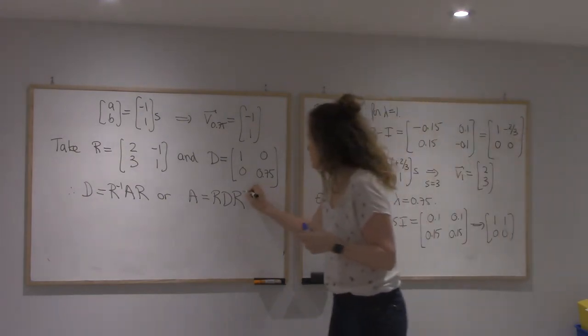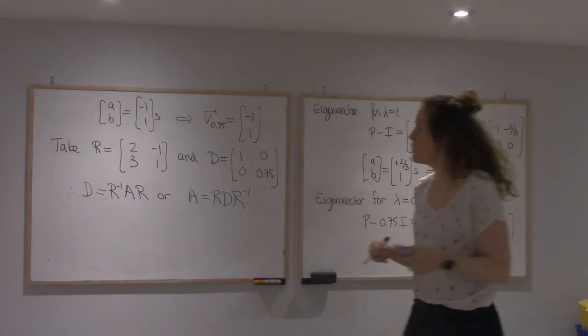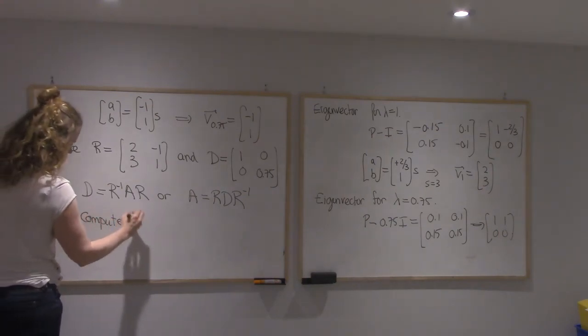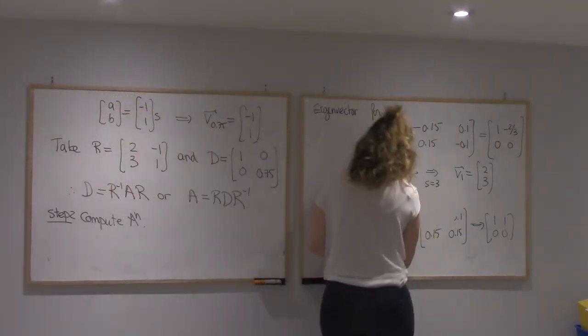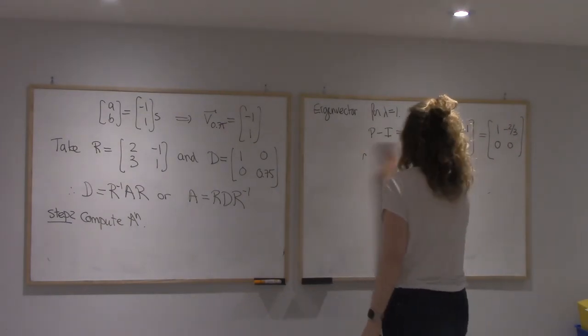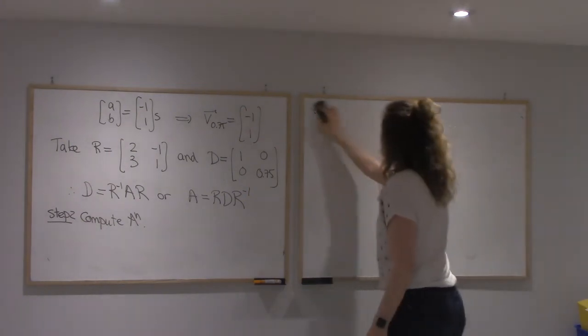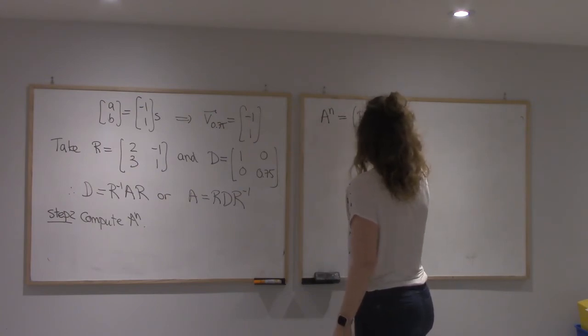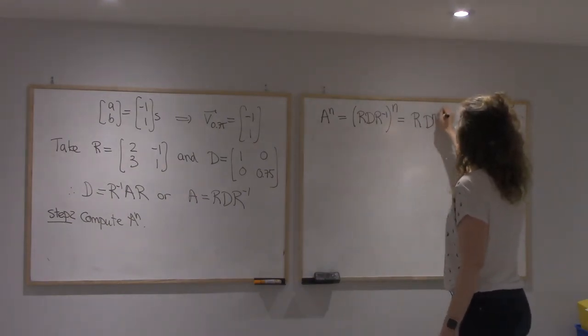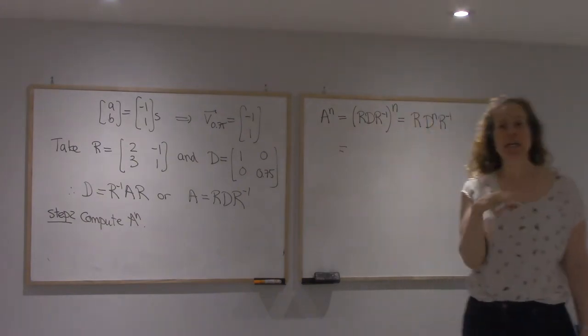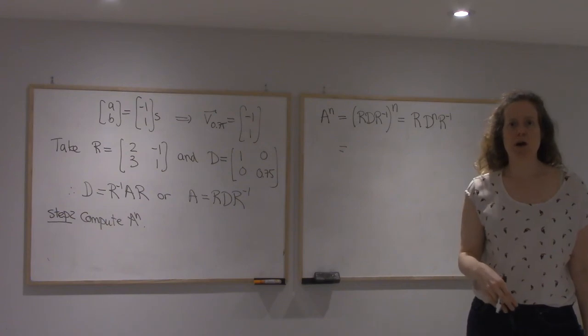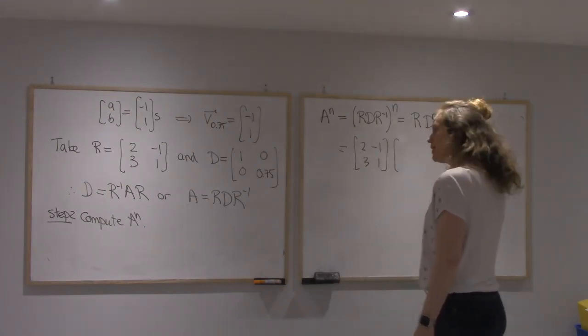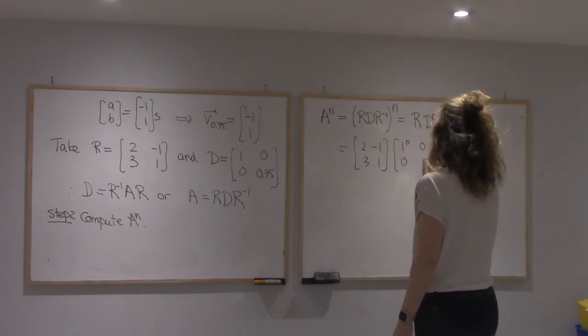All right, now we're ready to take powers. So P to the n would be R D R^(-1) to the n, which we know is R D^n R^(-1). And when we take a diagonal matrix and raise it to a certain power, we just take the diagonal entries to that power. So R stays 2, 1, 3, minus 1. D to the n will be 1 to the n, 0, 0, and 0.75 to the n.